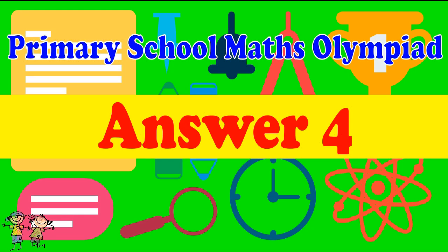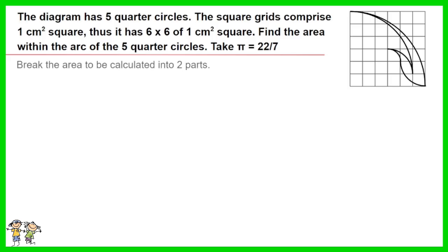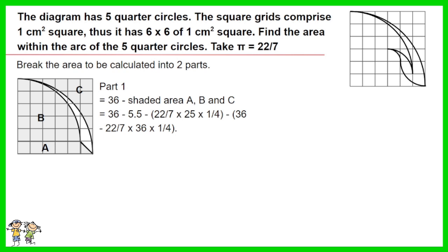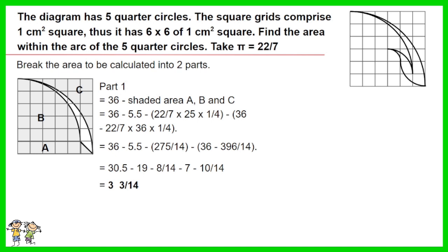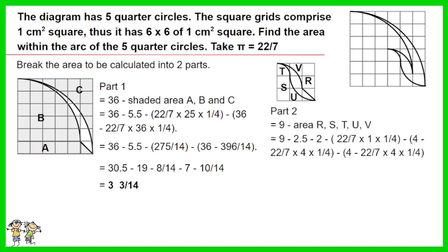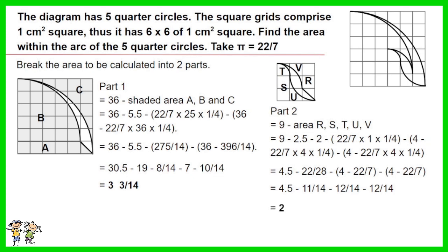Answer for Question 4. Break the area to be calculated into two parts. Part 1 equals 36 minus shaded areas A, B and C. Work out the equation — Part 1 equals 3 and 3 over 14. Part 2 equals 9 minus areas R, S, T, U, V. Work out the equation — Part 2 equals 2. Part 1 plus Part 2 equals 3 and 3 over 14 plus 2. The answer is 5 and 3 over 14 centimeters squared.